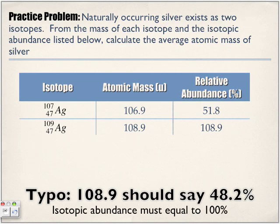Practice problem: Naturally occurring silver exists as two isotopes. From the mass of each isotope and the isotopic abundance listed below, calculate the average atomic mass of silver. Okay, so take a moment and look at this table.